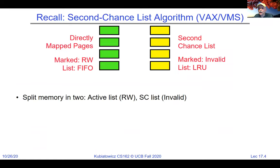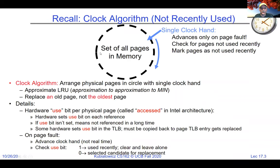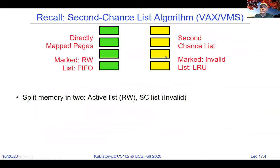The other thing we talked about was the second chance algorithm, which has the same goal as the clock algorithm: find an old page — not the oldest page, but an old page. The second chance algorithm was designed in VaxVMS, where the hardware didn't have a use bit, so this was a different algorithm than clock. The idea here is two groups of pages: the ones in green are mapped and ready to use; the ones in yellow are there with their contents, but marked as invalid in the page table. The ones in yellow are put together in an LRU list; the ones in green are handled FIFO.